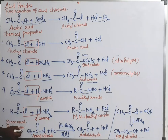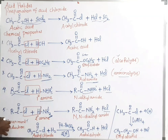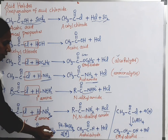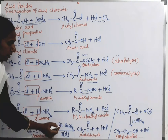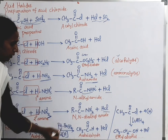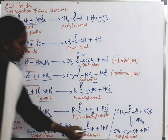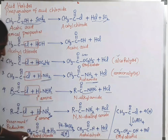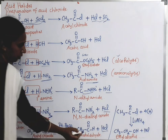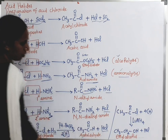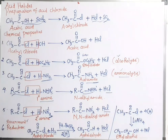The last reaction is a reduction reaction called Rosenmund reduction. Acid chloride undergoes reduction in the presence of palladium on barium sulphate catalyst. HCl is removed, and the remaining part is CH3CHO — acetaldehyde. So acetaldehyde is formed in Rosenmund reduction.